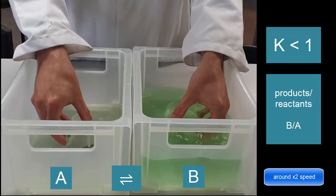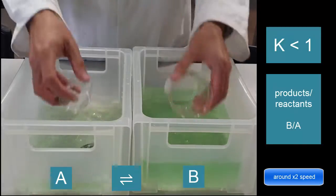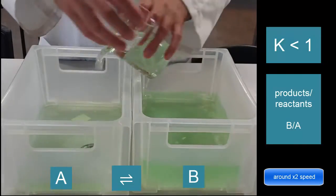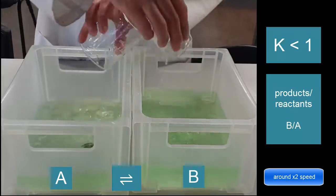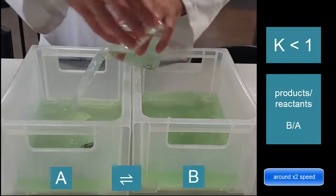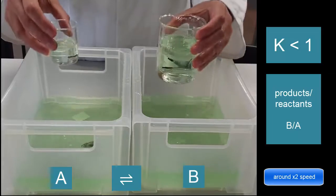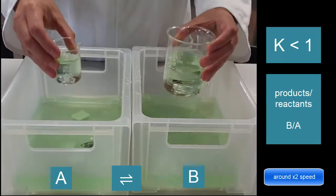So K smaller than 1, you can see that products over reactants are B over A, so most of the contents will, because it's less than 1, most of it will stay as the reactants and less than the products.